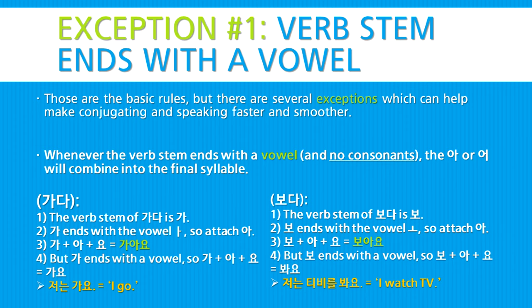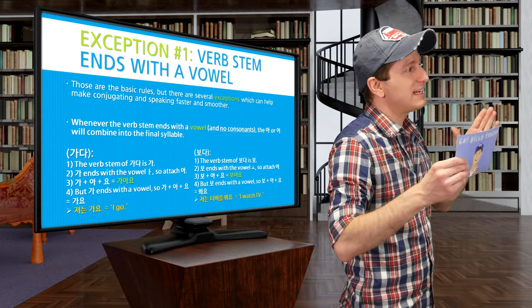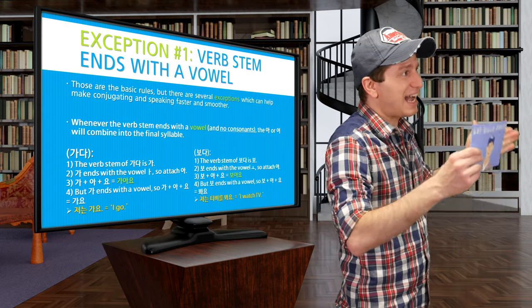So 가다: the verb stem is 가, which ends in a vowel with no consonants at the bottom. Since 가 ends with the vowel 아, we attach the syllable 아: 가 + 아. However, since 가 ends with a vowel, we combine the 아 syllable into 가 and we just get 가요. So the sentence is 저는 가요 — I go. We don't need to say 저는 가아요. This rule makes words easier to pronounce.